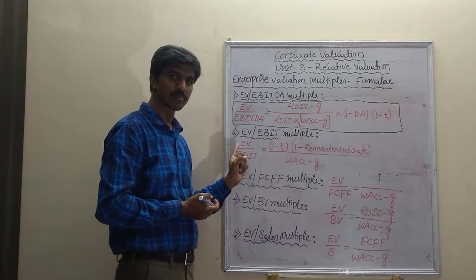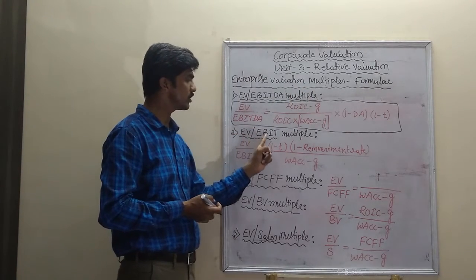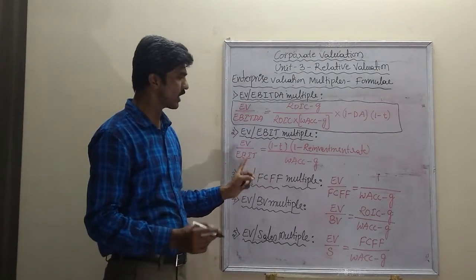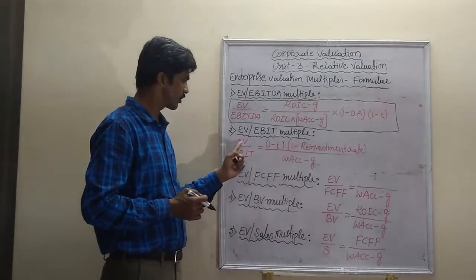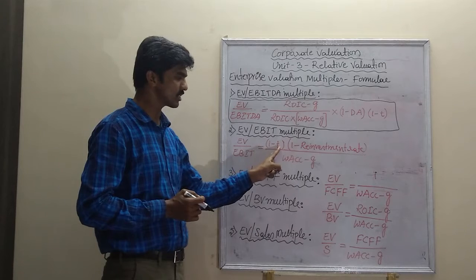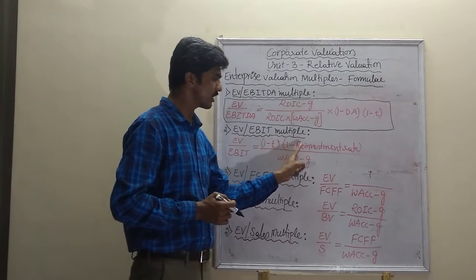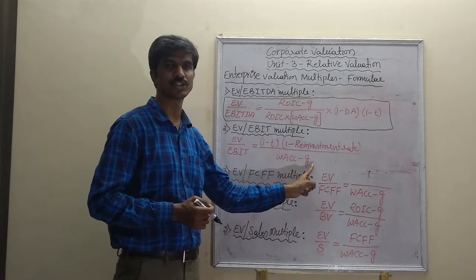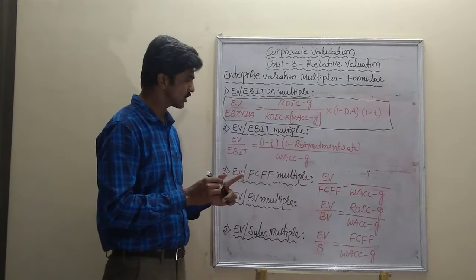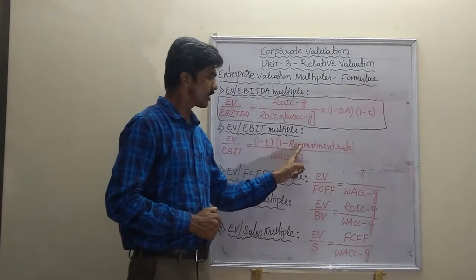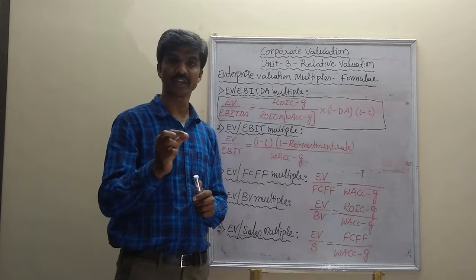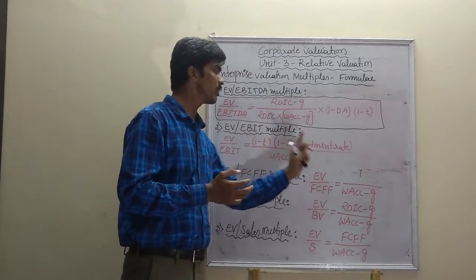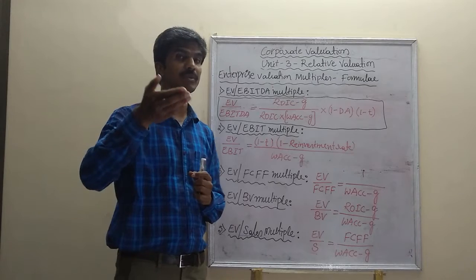Now move to the next multiple under enterprise valuation multiples, that is EV to EBIT multiple. To calculate this multiple, we use the following formula: EV to EBIT is equal to (1 minus T) into (1 minus reinvestment rate) divided by (WACC minus G). Wherein T stands for tax rate applicable to the company, and reinvestment rate is the rate at which shareholders invest back the income in the company — that is dividend payout,